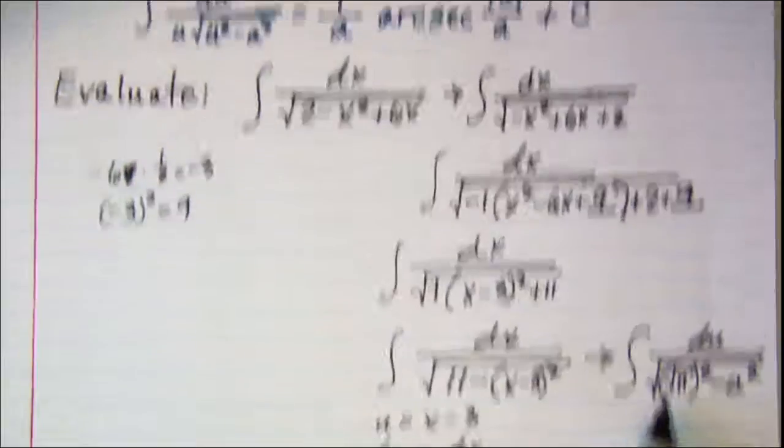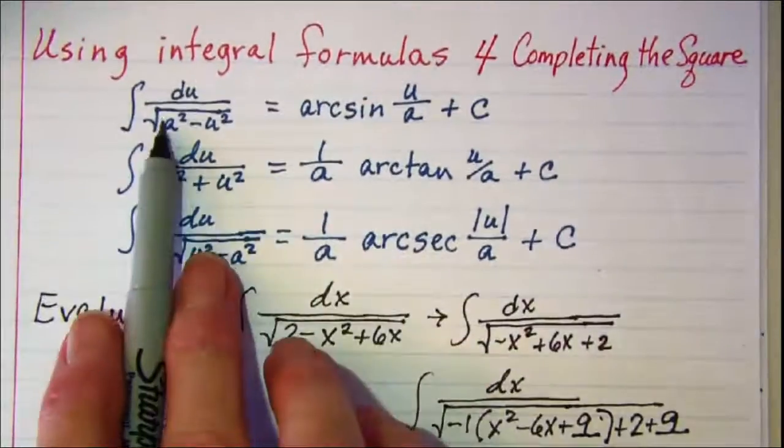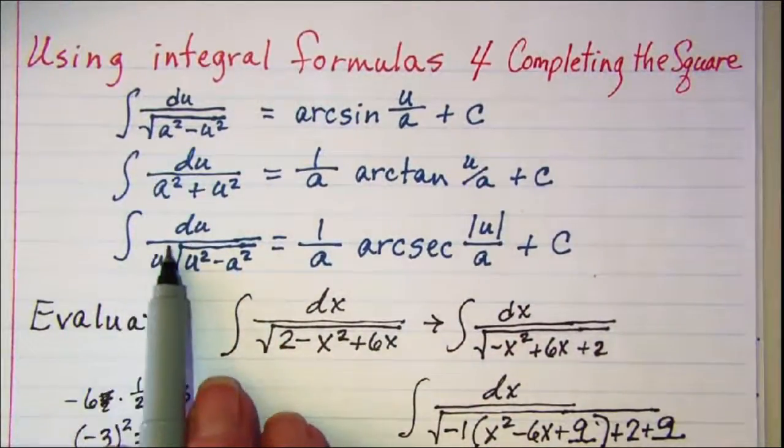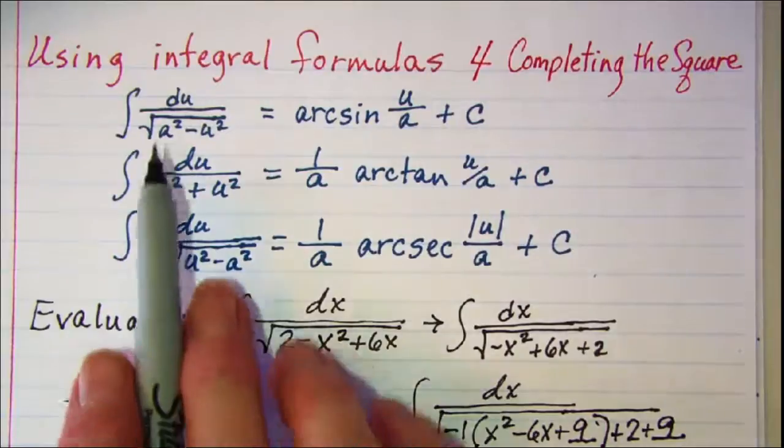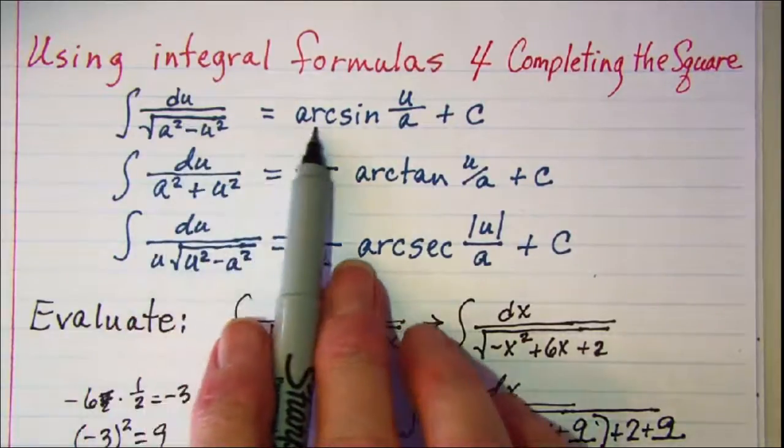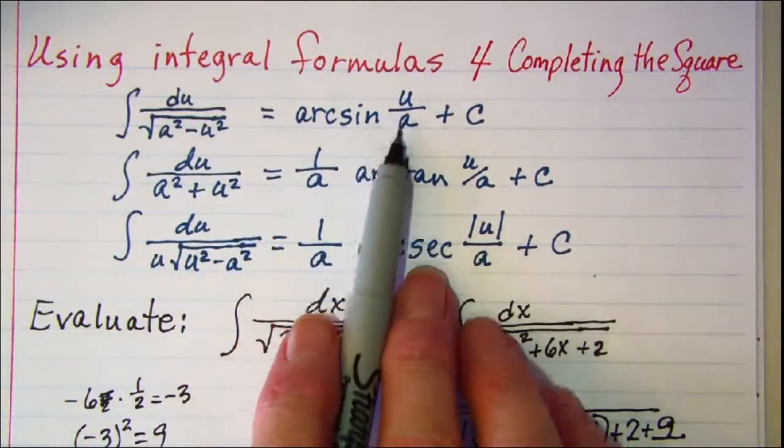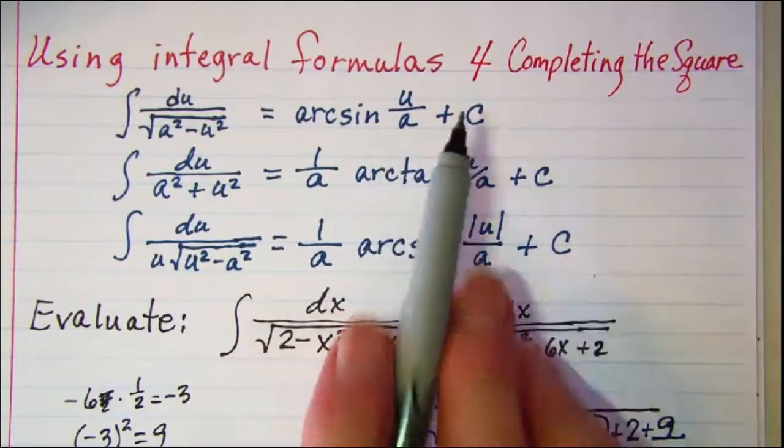So now using our formula we know it has to be this one here because I don't have a variable out in front of the radical. So our formula says that this is arcsine u over a plus a constant.